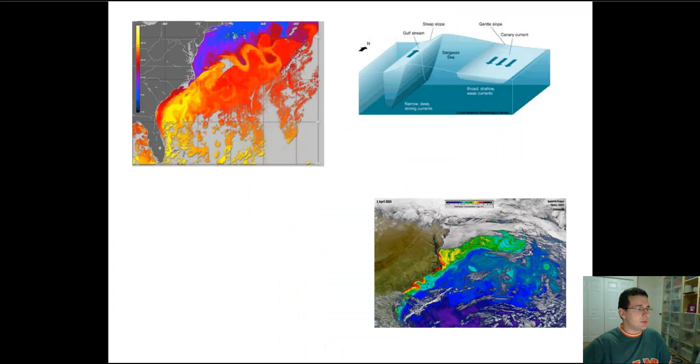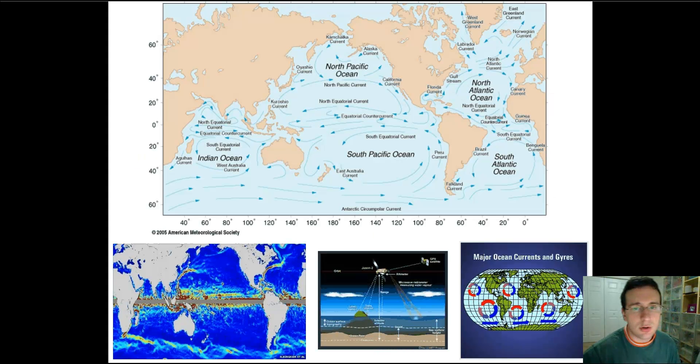Now, remember that these currents are actually distributing heat around the world, and just like the wind patterns, ocean currents are crucial in maintaining the climate of a region. Through these gyres that distribute heat, like I mentioned about the Gulf Stream and the Kuroshio Current warming up the Northern Hemisphere.